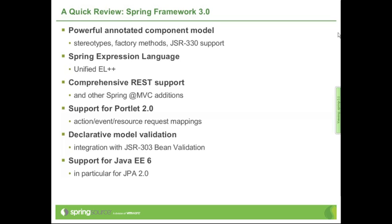Java EE 6 came out at the same time as Spring 3.0, just a few days apart. Spring 3.0 was ahead of its time and was already tracking Java EE 6 specifications. You will see support for Java EE 6 specifications such as JPA 2 and Java Servlet 3. JSR 330 and JSR 303, mentioned above, are also part of the Java EE 6 umbrella, despite being independent specifications.